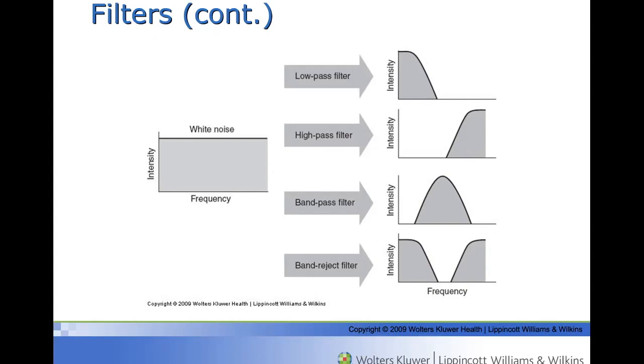A high-pass filter passes the high-frequency energy and blocks the low-frequency energy. These filters are used to eliminate the 60 hertz hum produced by an alternating or AC power.